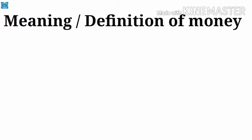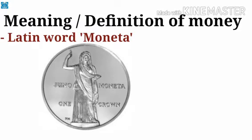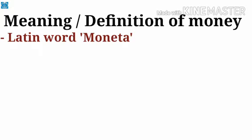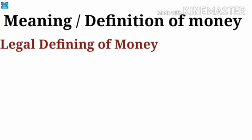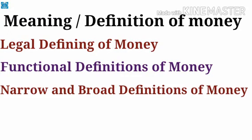Now we will learn about the meaning and definitions of money. The word money is derived from the Latin word 'monida', which is a surname of the Roman goddess Juno, whose temple is at Rome, and it was there that the word money was coined. Economists hold different opinions about the definitions of money, and here we have three of them: legal definition of money, functional definitions of money, and narrow and broad definitions of money.